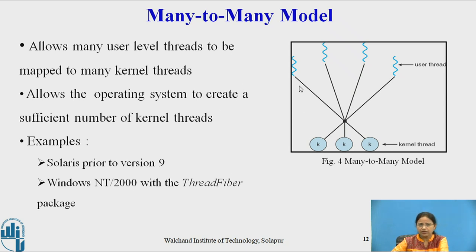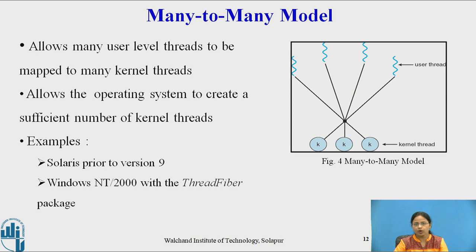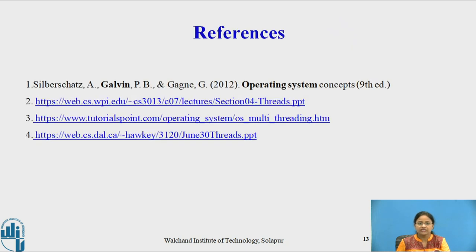In the many-to-many model, user threads are mapped to kernel threads. User threads are supported by the thread library at user space, while kernel threads are created by the operating system. One drawback of the one-to-one model is that each user level thread needs to create a corresponding kernel level thread. In summary, we have covered user threads, kernel threads, and the three thread models: many-to-one, one-to-one, and many-to-many. Most recent operating systems use the one-to-one model. Thank you.